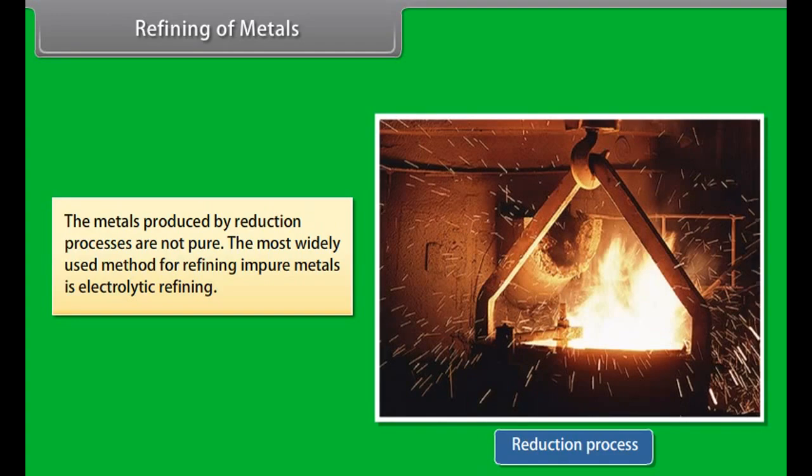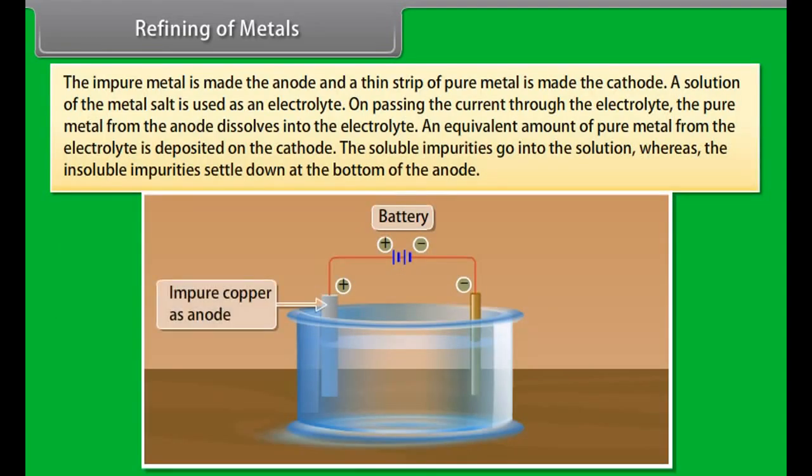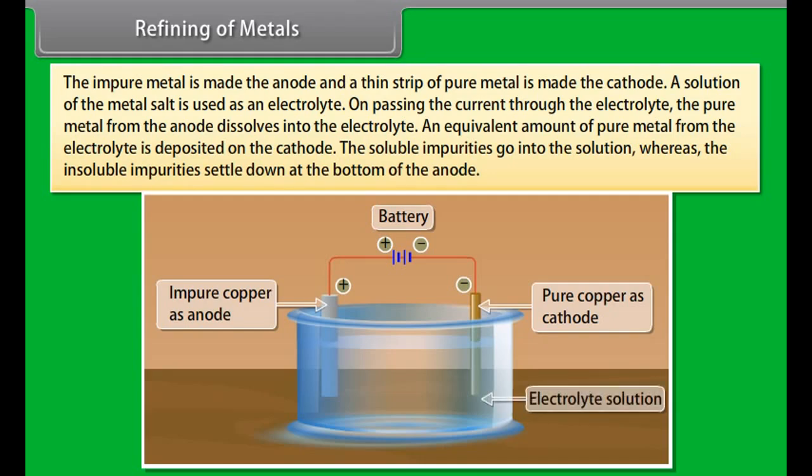Extracting metals towards the top of the activity series. The metals that are high up in the reactivity series are very reactive and cannot be obtained from their compounds by heating with carbon as these metals have more affinity for oxygen than carbon. These metals are obtained by electrolytic reduction.